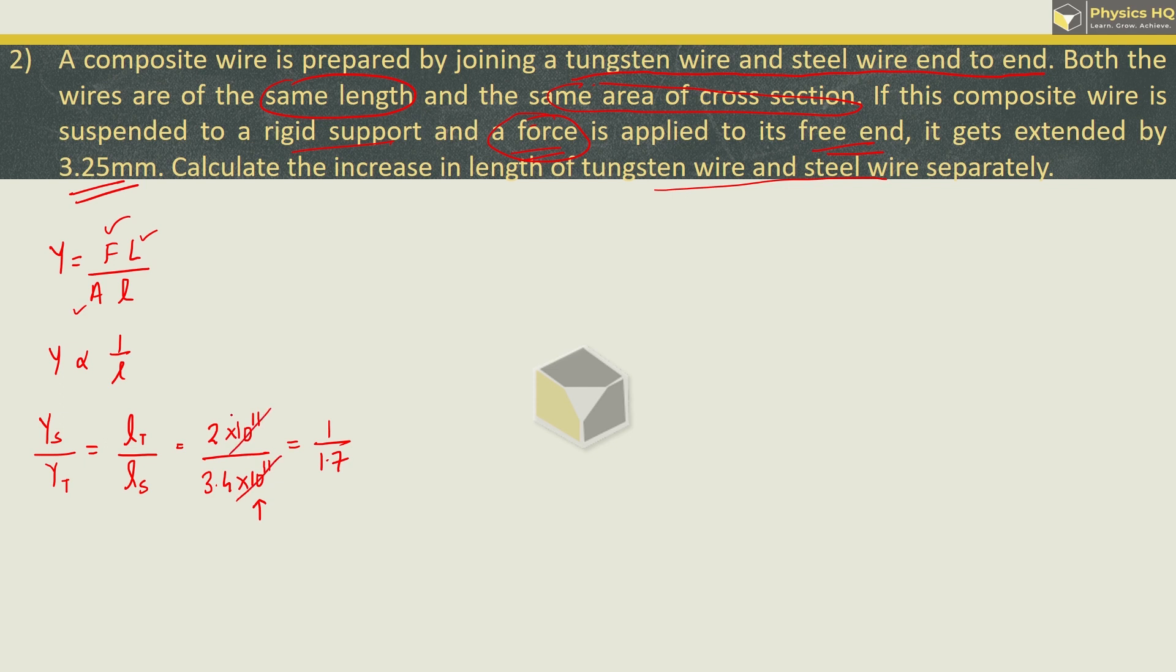This is 1/1.7, this cancels here, and this is 2 divided by 1.7. When you solve this, it's 0.59. From this we can say length of tungsten is 0.59 times the length of steel wire. Now in the last statement, their combination is extended by 3.25 mm. This means extension in steel plus extension in tungsten, both combination is 3.25 mm.